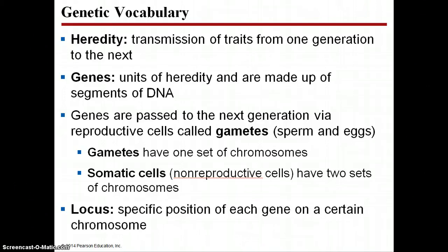You also need to be comfortable with a couple of different types of cells. When genes are passed to the next generation, they're passed through gametes. So meiosis is how gametes are created. Gametes have one set of chromosomes. When we were talking about mitosis, we were talking about somatic cells — somatic cells have two sets of chromosomes. So we're going to be talking about gametes and how gametes are formed. When we look at the specific position of a gene on a chromosome, we're going to refer to the locus.